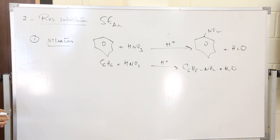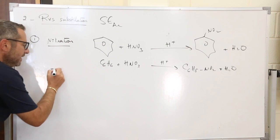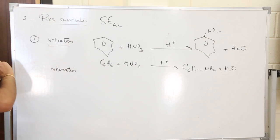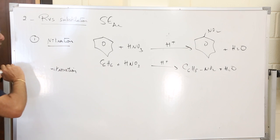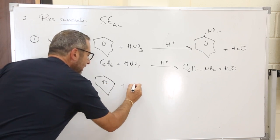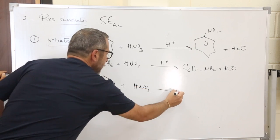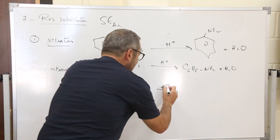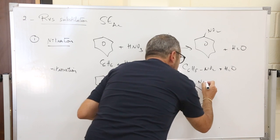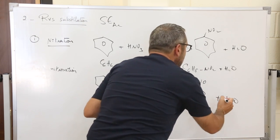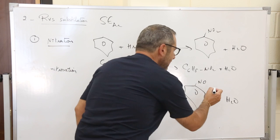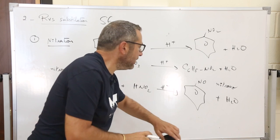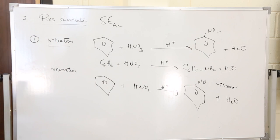This is the first reaction: nitration. We have another reaction called nitrosation — instead of placing the group NO2 we place the group NO. It is the same type of reaction, but instead of using HNO3 (nitric acid), we use HNO2 (nitrous acid) with H+. We obtain benzene-NO plus water. The group NO2 is called nitro; the group NO is called nitroso. These are the first reactions: nitration and nitrosation.